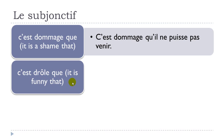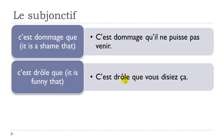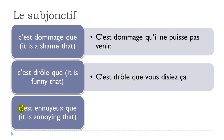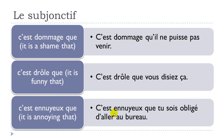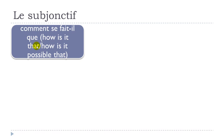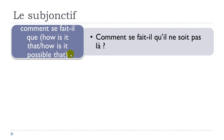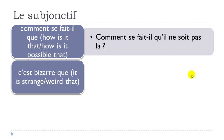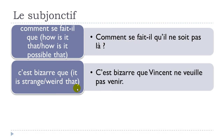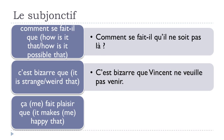C'est drôle que — it is funny that — c'est drôle que vous disiez ça. C'est ennuyeux que — it is annoying that — c'est ennuyeux que tu sois obligé d'aller au bureau. Comment se fait-il que — how is it that, how is it possible that — comment se fait-il qu'ils ne soient pas là. C'est bizarre que — it is strange, weird that — c'est bizarre que Vincent ne veuille pas venir.